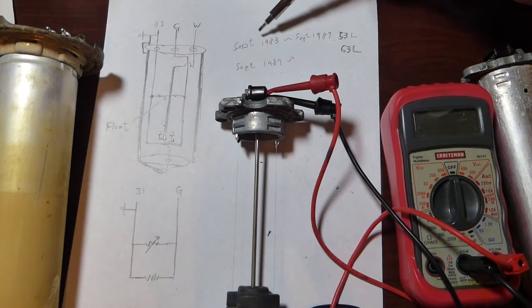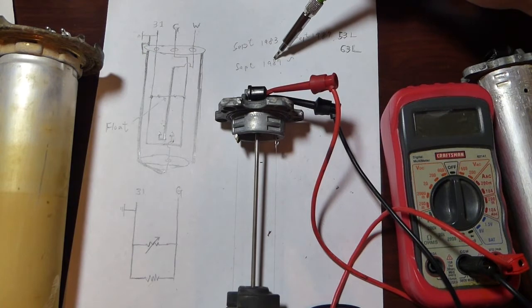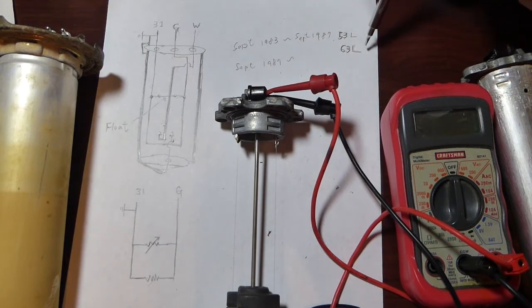From September 1983 to September 1987, E30 is equipped with a 53 liter tank. From September 1987 and onward, it has a 63 liter tank.